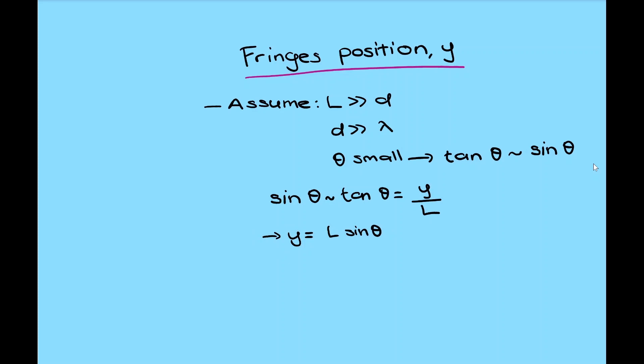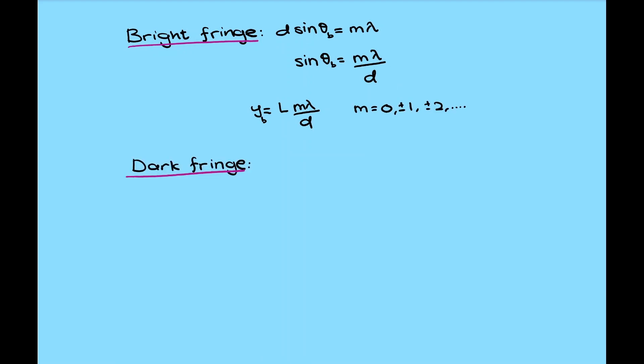For the position of the bright fringe, we can combine the above equation with the condition for bright fringe. And finally, we get the position for bright fringe is given by y equal to l m lambda over d. Similar approach can be done to locate the position of dark fringe, and it's given by the following equation.